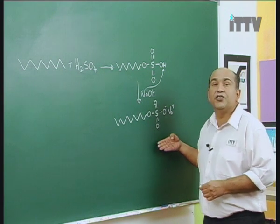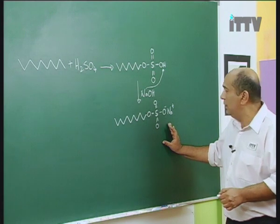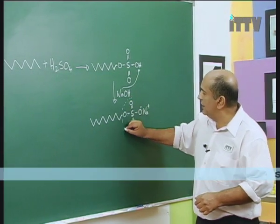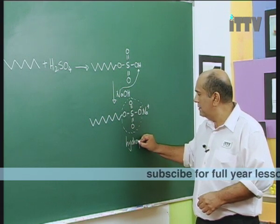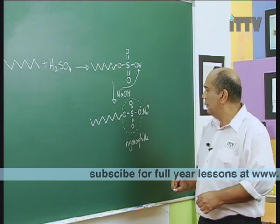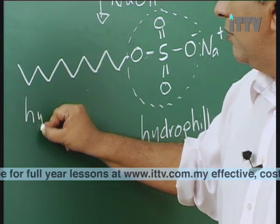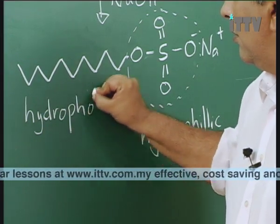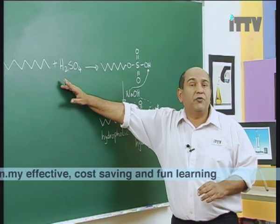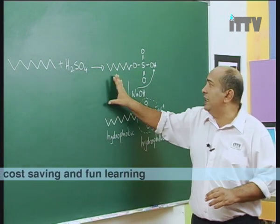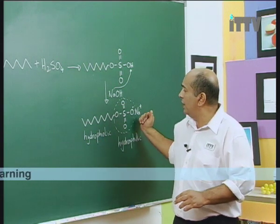This is your detergent molecule. When you put it into water, it will disassociate just like normal. The sodium will leave, and the sulfonate area represents your hydrophilic area, while the hydrocarbon tail — because hydrocarbons are insoluble in water — represents your hydrophobic part. This is how you basically produce a detergent. Remember: the alkyl part comes from petroleum, concentrated sulfuric acid produces the alkyl sulfuric or sulfonic acid, and then you react it with sodium hydroxide to produce the sodium alkyl sulfonate.